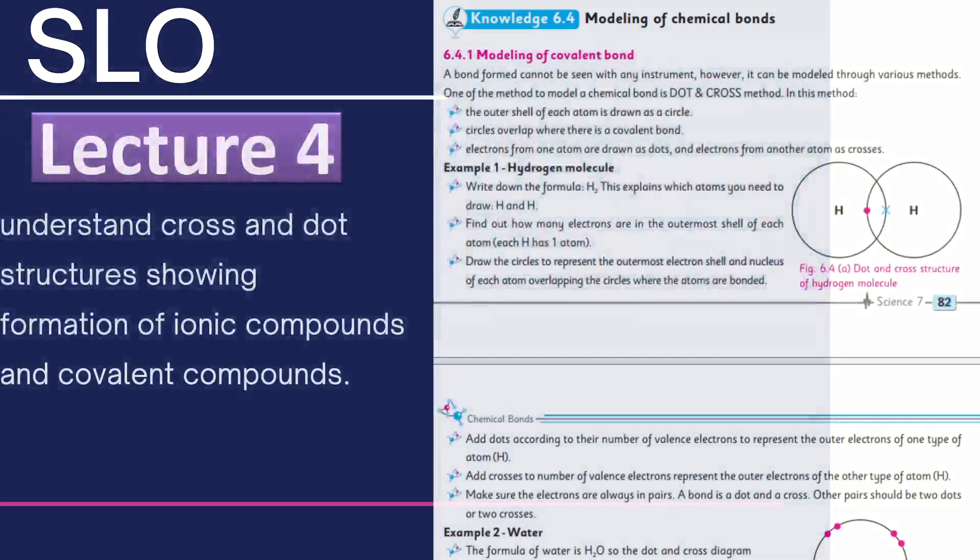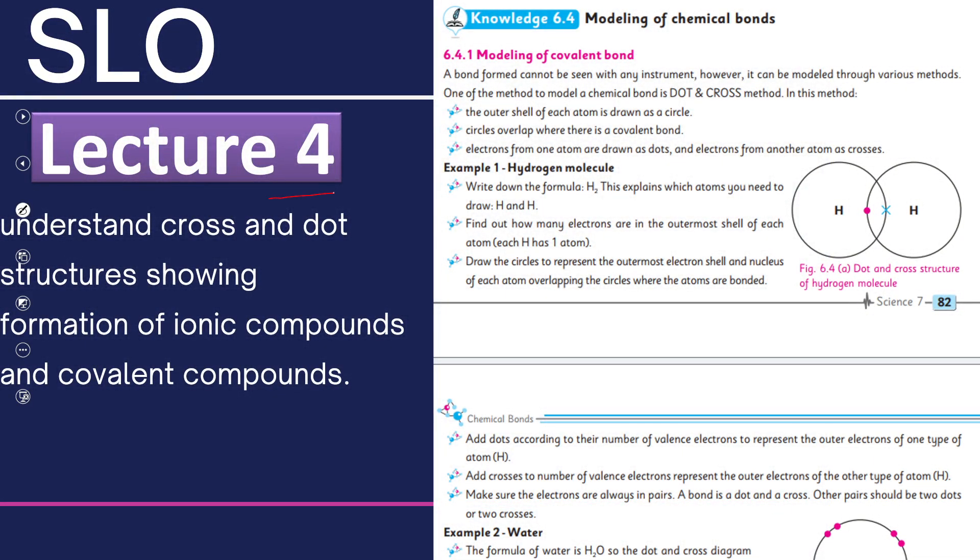In lecture 4, we will learn about dot and cross formulas and how we can represent them. We will discuss the modeling of covalent bonds with the help of different examples.